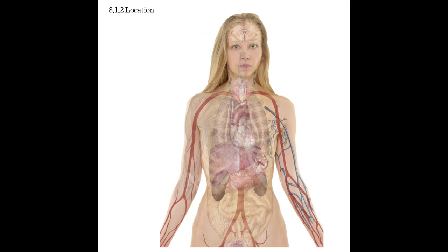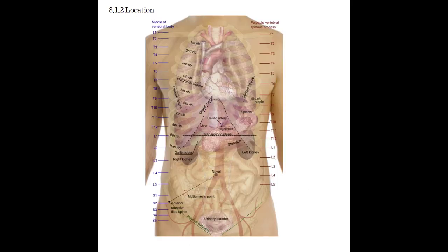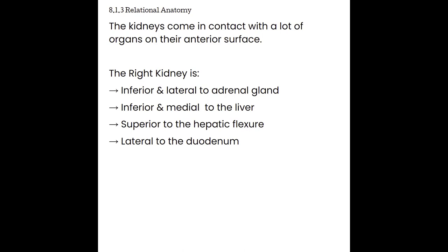The kidneys are retroperitoneal organs, located more medially in the body toward the posterior. The right kidney is found posterior to the liver, and the left kidney is posterior to the spleen. Due to the size difference of the liver and spleen, the right kidney tends to be a little more inferior and more medial, and also just a little bit smaller than the left kidney. On the posterior side, the kidneys are partially protected by the 11th and 12th rib. The bladder sits within the pelvis below the peritoneal cavity, between the rectum and pubic symphysis, or between the uterus and the pubic symphysis. The ureters, also retroperitoneal organs, connect the kidneys to the bladder.